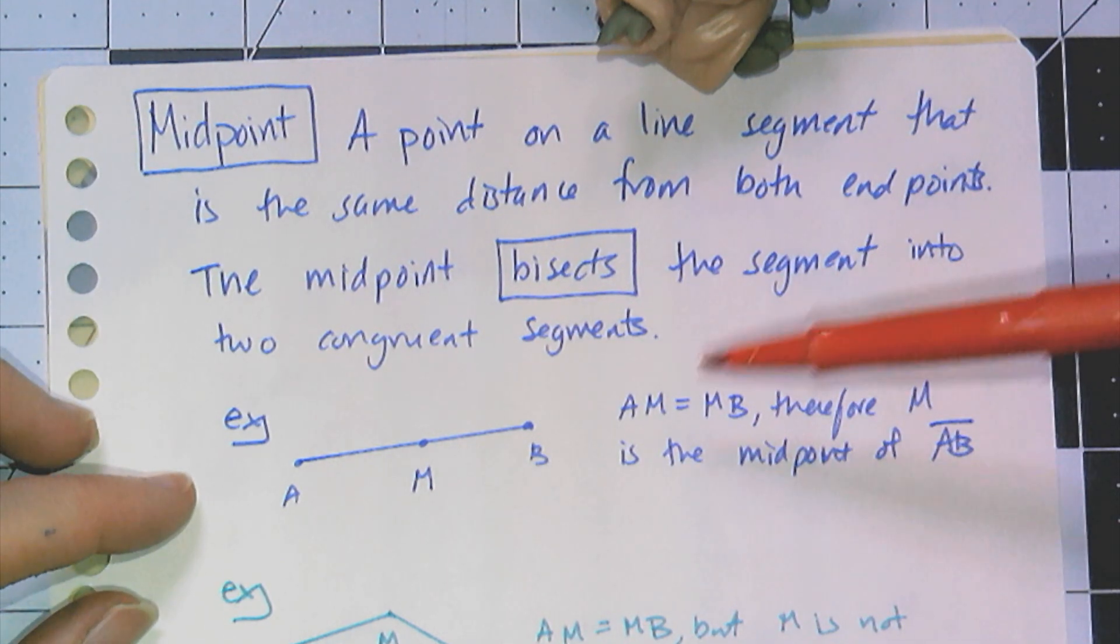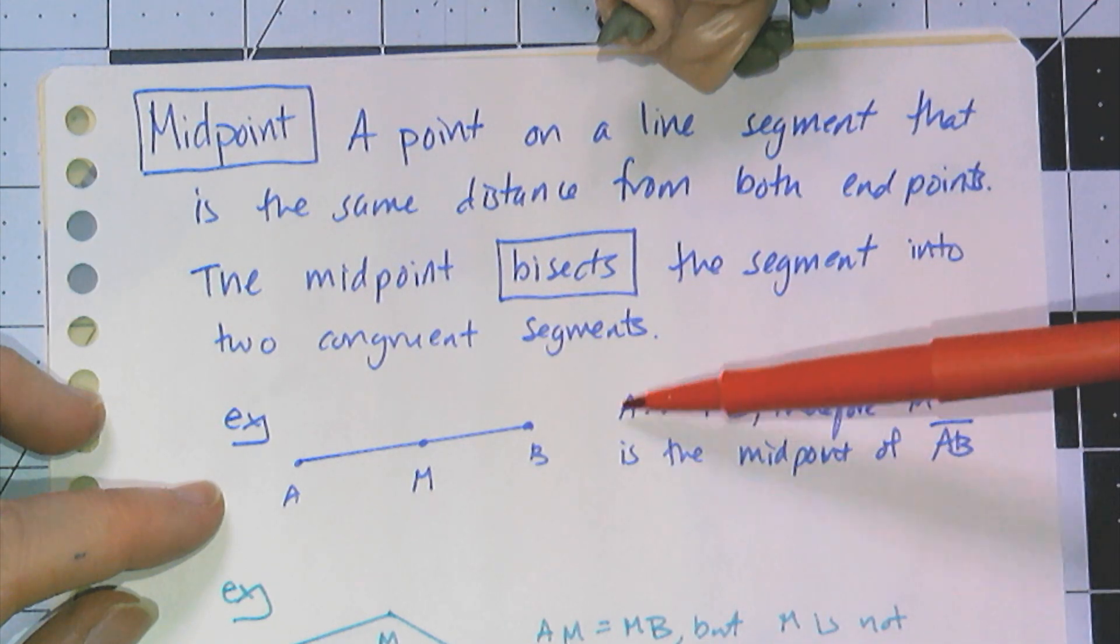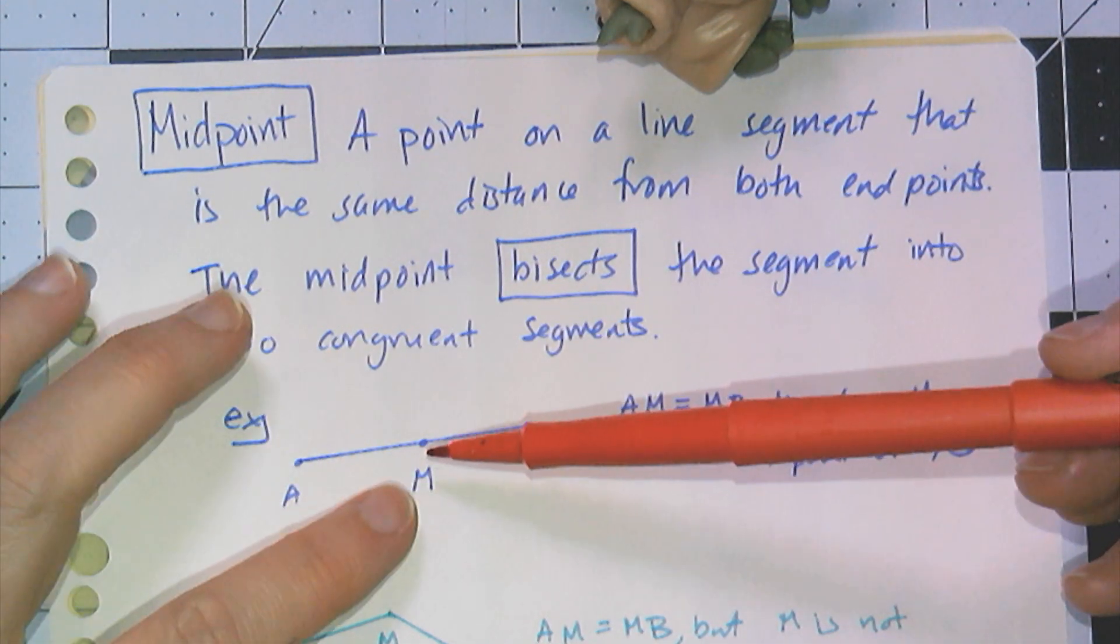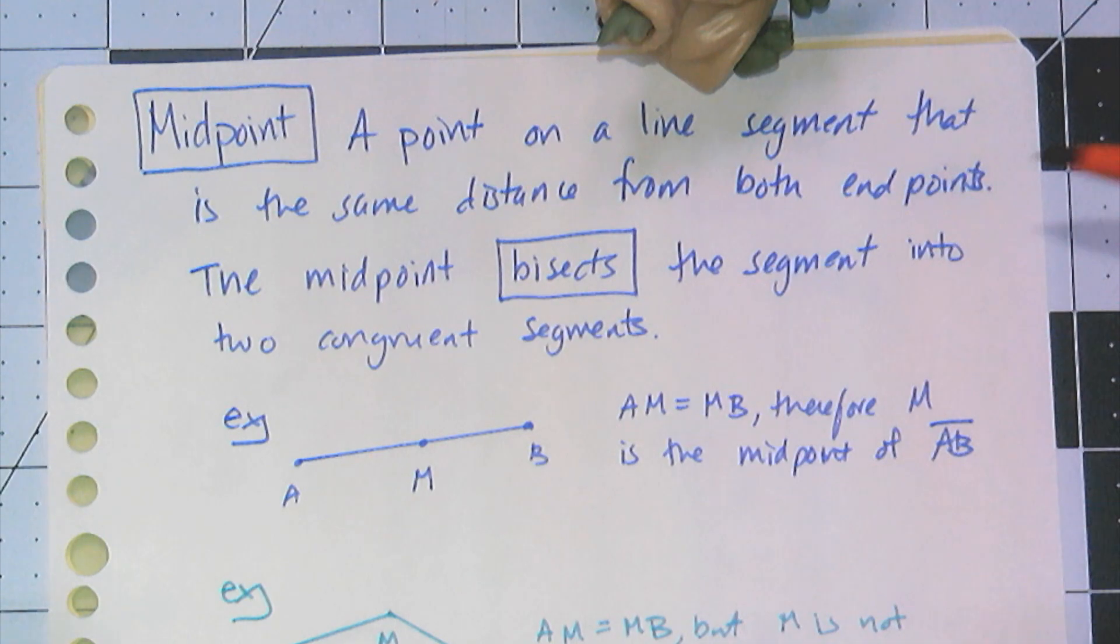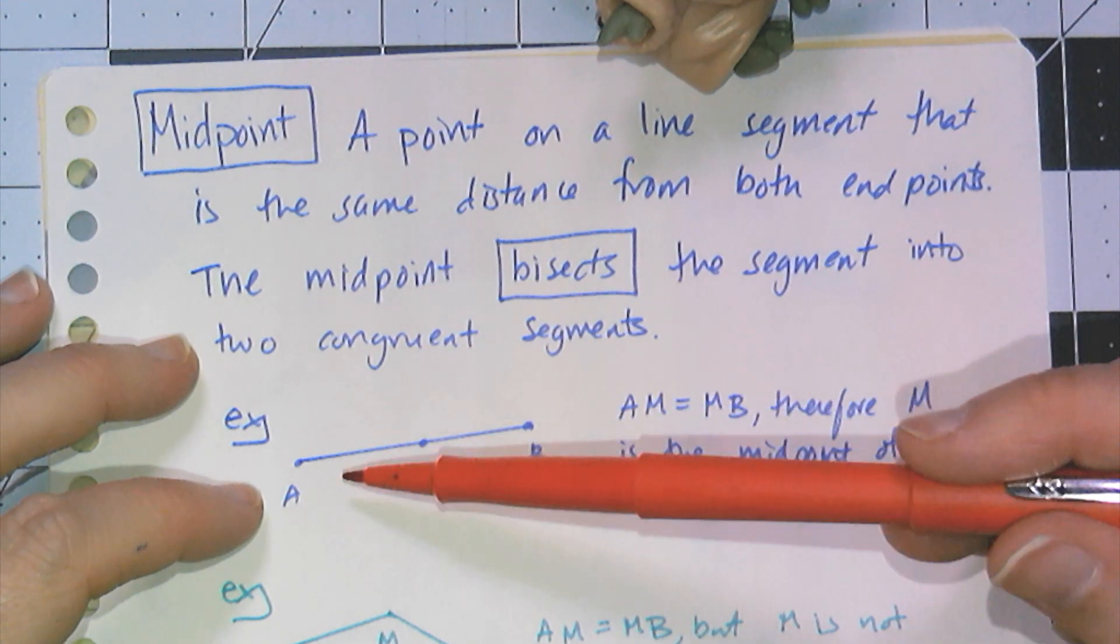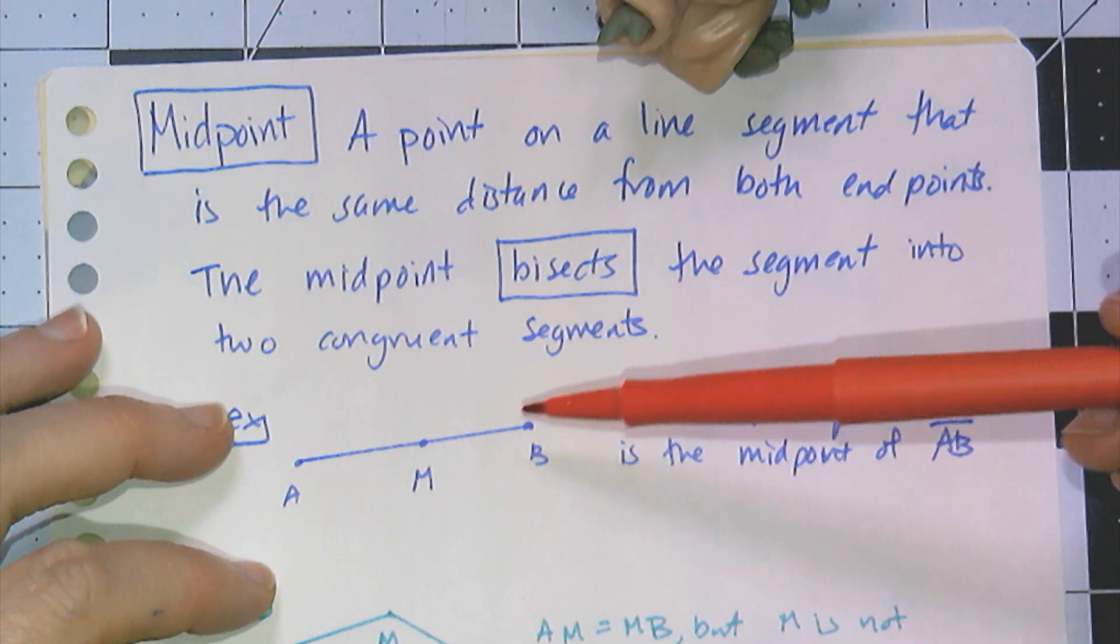If I draw this picture, and it comes with this statement that AM equals MB, meaning the distance between A and M and the distance between M and B are equal, that means M is the midpoint of line segment AB. That's because all three of these points are collinear.